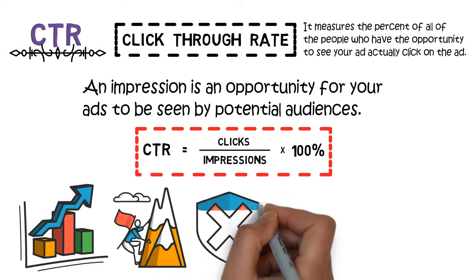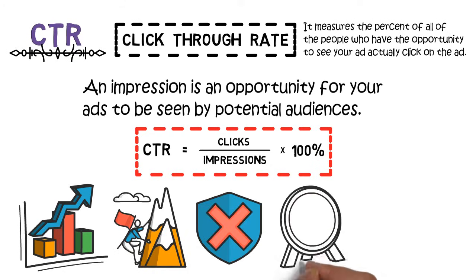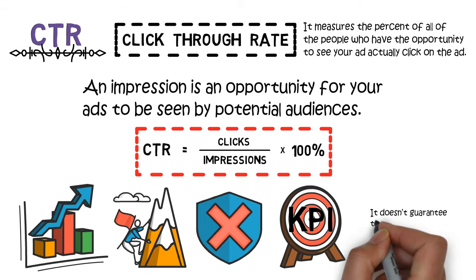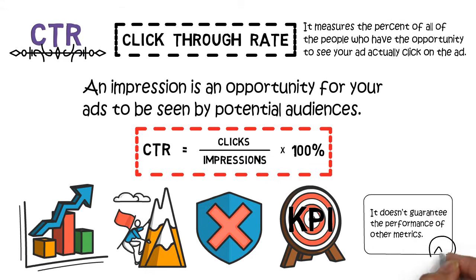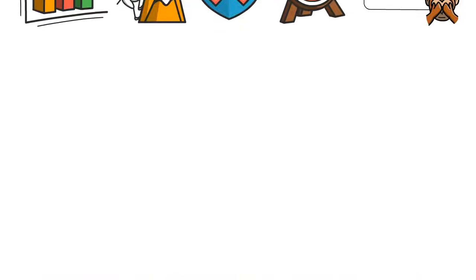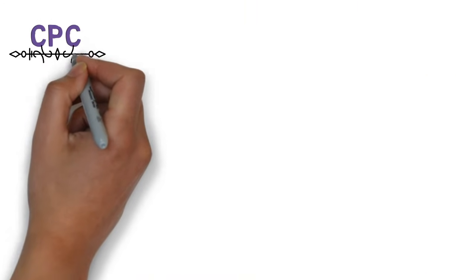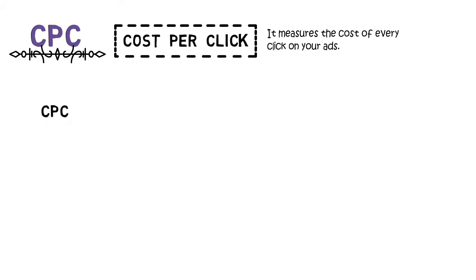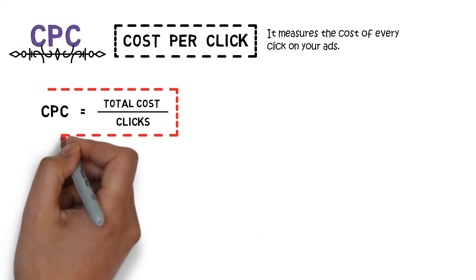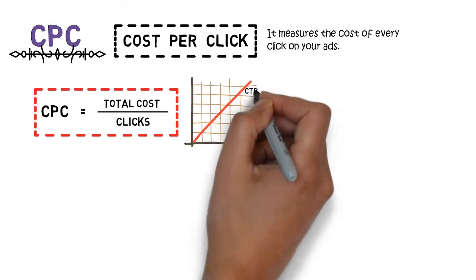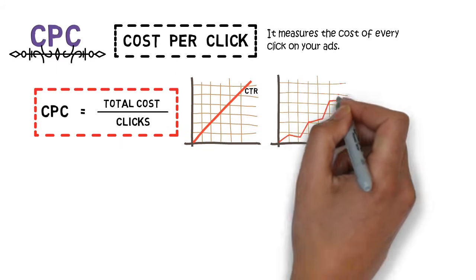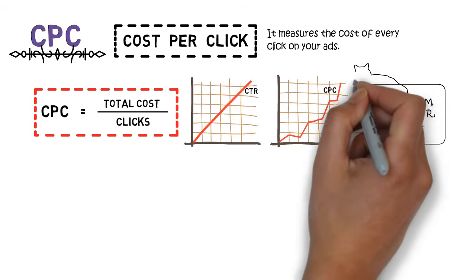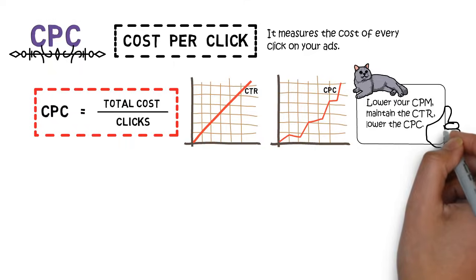However, you should also watch out for fraudulent clicks. When running a campaign, it is important to know your key performance indicator, KPIs. Although a higher CTR is generally better, it doesn't guarantee the performance of other metrics. Cost per click, CPC, is also a very straightforward one — it measures the cost of every click on your ads, calculated as cost divided by clicks. When you see a campaign with high CTR but the CPC is also really high, you can check your CPM — maybe you are bidding too high. If you are able to lower your CPM while maintaining the CTR, you will be able to bring down your CPC.